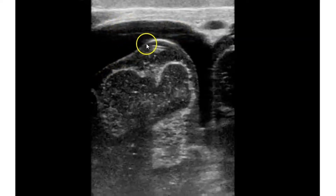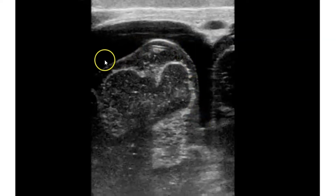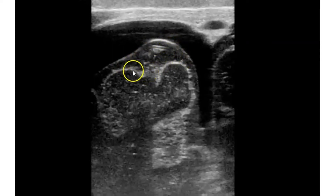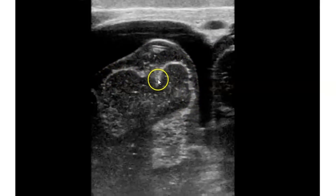And then you have the arachnoid membrane right here. Under the arachnoid membrane, you can see the more echogenic fluid with the crossing vessels as well. This is a typical area where we see the extra-axial fluid, especially the benign enlargement of the extra-axial spaces. And then around the cortex of the brain, you can see the pia membrane of the pia matter.